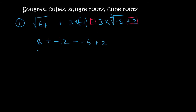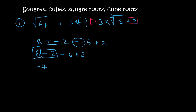Now we simplify the positives and negatives. A positive and a negative is a negative; a negative and a negative is a positive. Going from left to right: if you have 8 and give away 12, you have minus 4. If you owe 4 and someone gives you 6, you have 2. Then 2 plus 2 is 4.